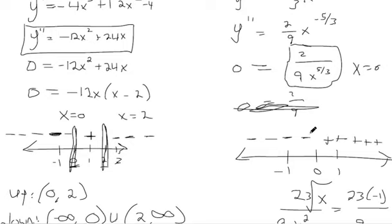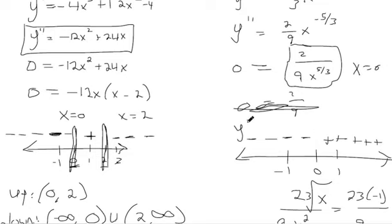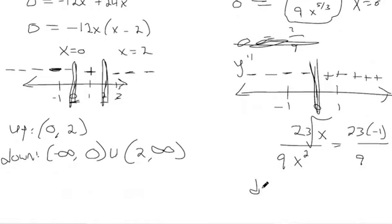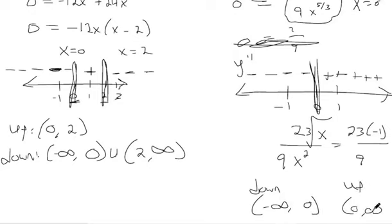Remember, these are second derivatives: negative means concave down, positive means concave up. The switch happens right at x equals 0. So to answer the question: it's concave down from negative infinity to 0, and concave up from 0 to positive infinity.